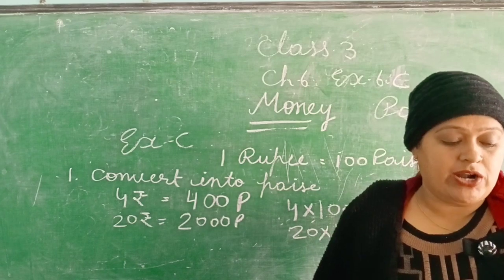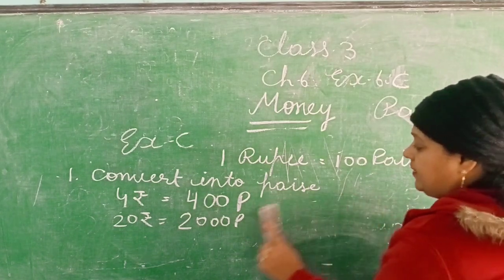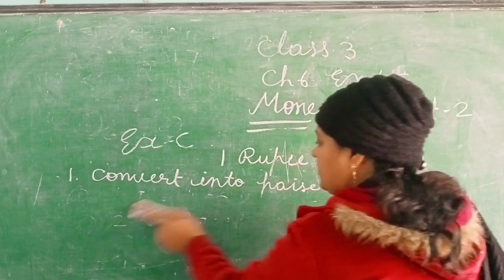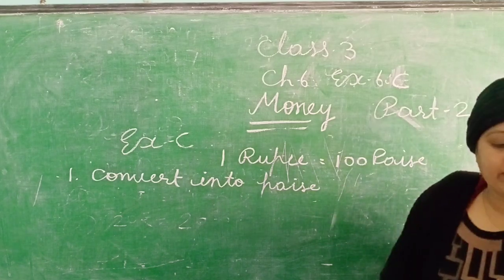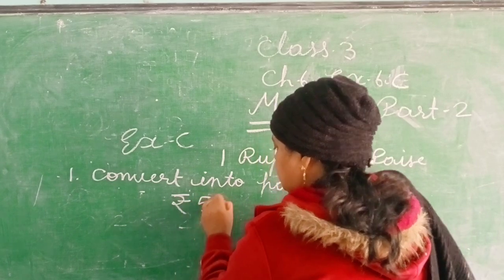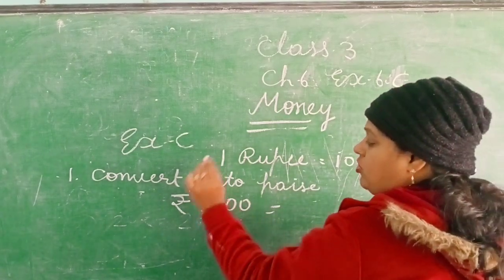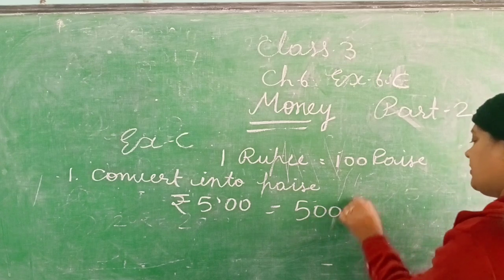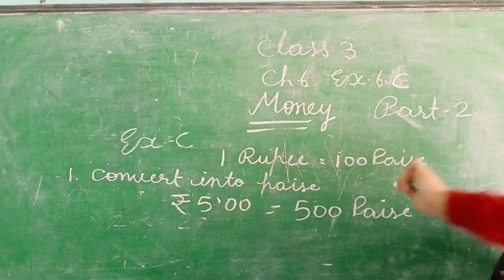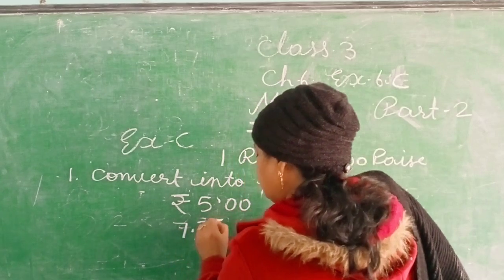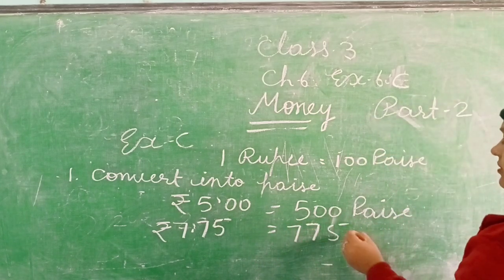Next: convert into paise. Ab humein kya diya gaya hai? Rupees diye gaye hain. Paise mein convert karna hai. For example, 25 paise — bilkul bhi convert nahi hona. Beech wale dot ko hatao. Sirf dot ko remove karna hai. Next: 7.75 rupees. Simply remove the dot — 775 paise.